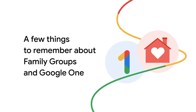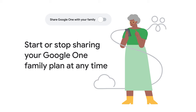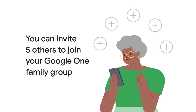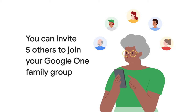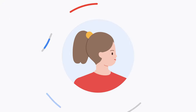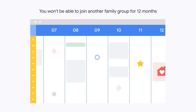Here are a few things to remember about using family groups with Google One shared storage. The Google One member who shares their storage is called the Google One plan manager. As the plan manager, you can start or stop sharing your Google One family plan at any time. You can invite five others to join your Google One family group for a total of six members. A family member can only join one family every 12 months. If you leave a family group and join a new one, you won't be able to join another family group for one year.